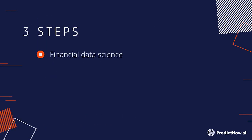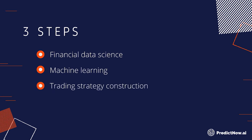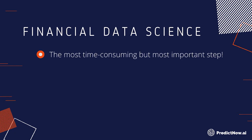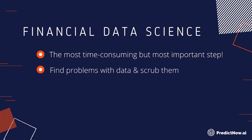There are generally three steps in applying machine learning to trading. The first step is actually the most tedious and most difficult step. It is not something that I can help you with the whole system. It is data scrubbing — finding problems with it and converting the raw data into features.